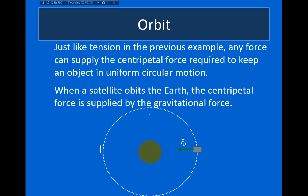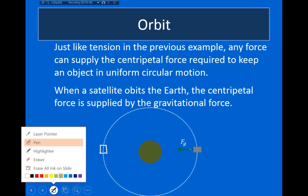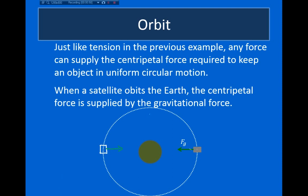For example, when the satellite is over here in its path, the gravitational force will point towards the planet. This means the gravitational force is always pointing inwards towards the center of its circular path. So right away, we can say that this gravitational force is supplying the centripetal acceleration for the satellite as it moves in uniform circular motion. Therefore, this gravitational force has to be equal to mv²/r.